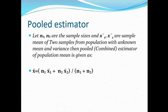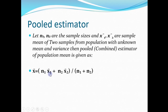The Pooled Estimator: let n1 and n2 be sample sizes and x-bar1, x-bar2 be the sample means of two samples from populations with unknown mean and variance. Then the pooled estimator of the population mean is x-bar = (n1*x-bar1 + n2*x-bar2) / (n1 + n2).